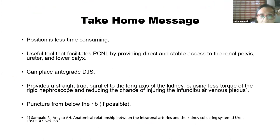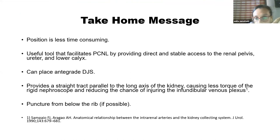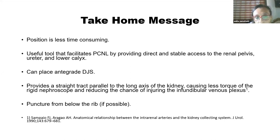The take-home message: the upper pole is better in terms of positioning because it is less time consuming — you don't need to bridge the patient. It is a useful tool facilitating PCNL by providing direct, stable access to the renal calyx, ureter, and lower calyx. You can place a DJ stent antegradely by placing the guide wire directly into the ureter. It provides a straight track parallel to the long axis of the kidney, causing less torque on the rigid nephroscope and reducing the chance of infundibular injury. Thoracic complications can be decreased by puncturing below the rib.